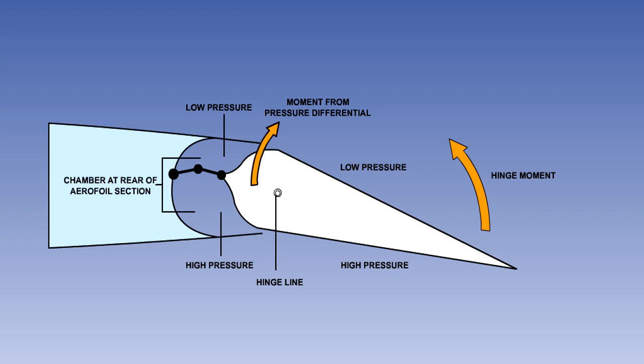The advantage of this system over the previous two is that because the balancing area is inside the wing, there is no increase in drag.